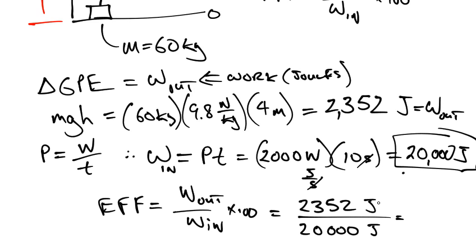So we get 2,352 divided by 20,000, and we're getting times 100, that's 11.7 or 11.8 percent.